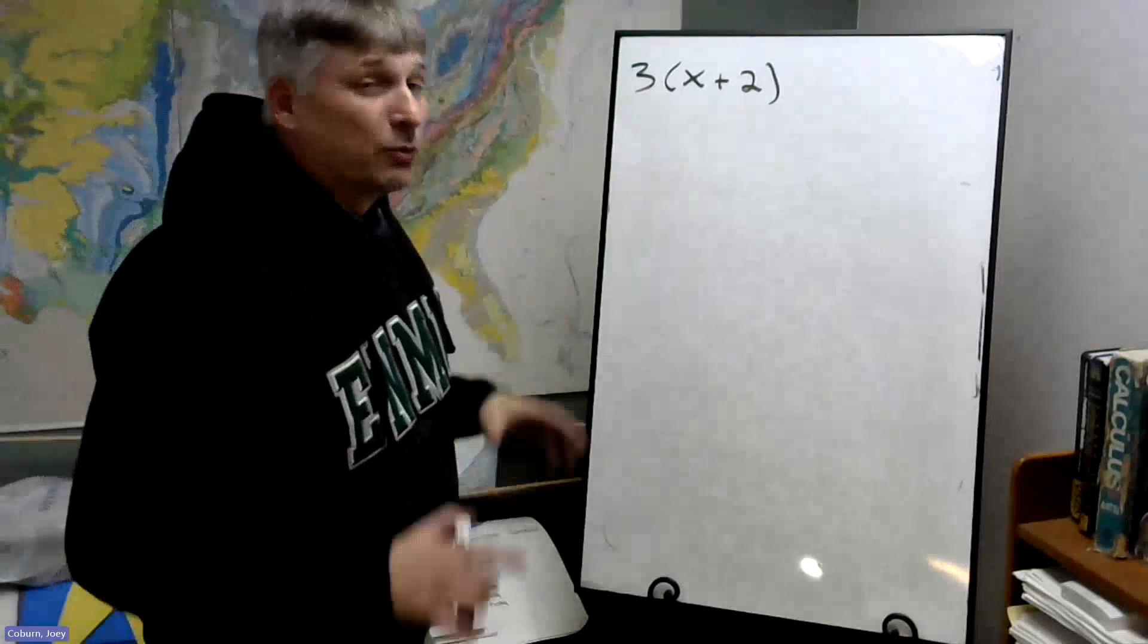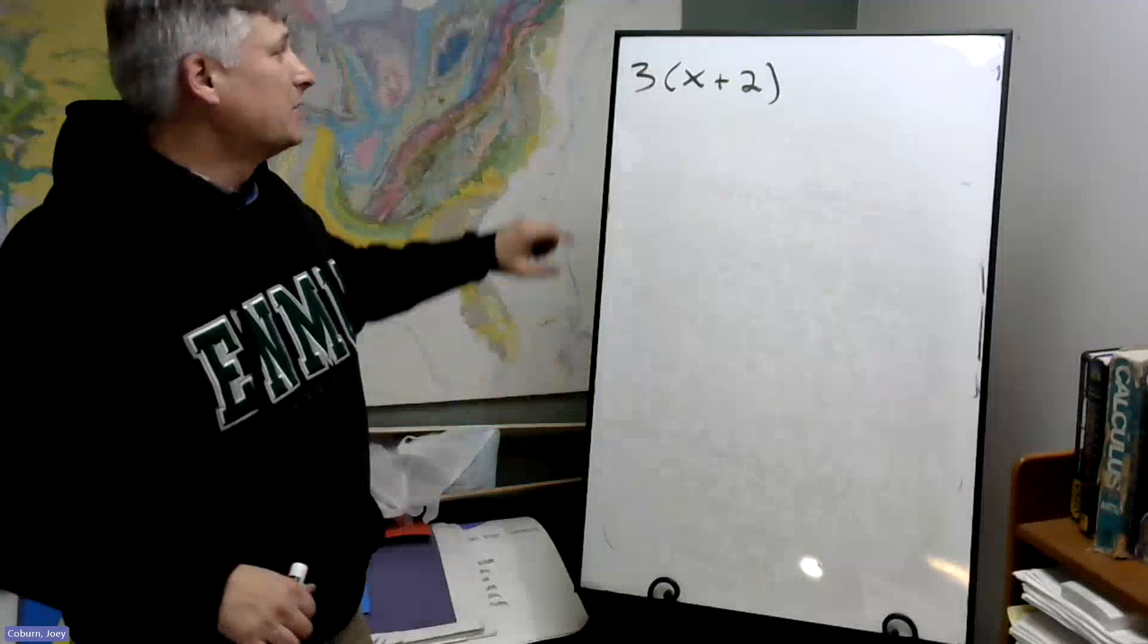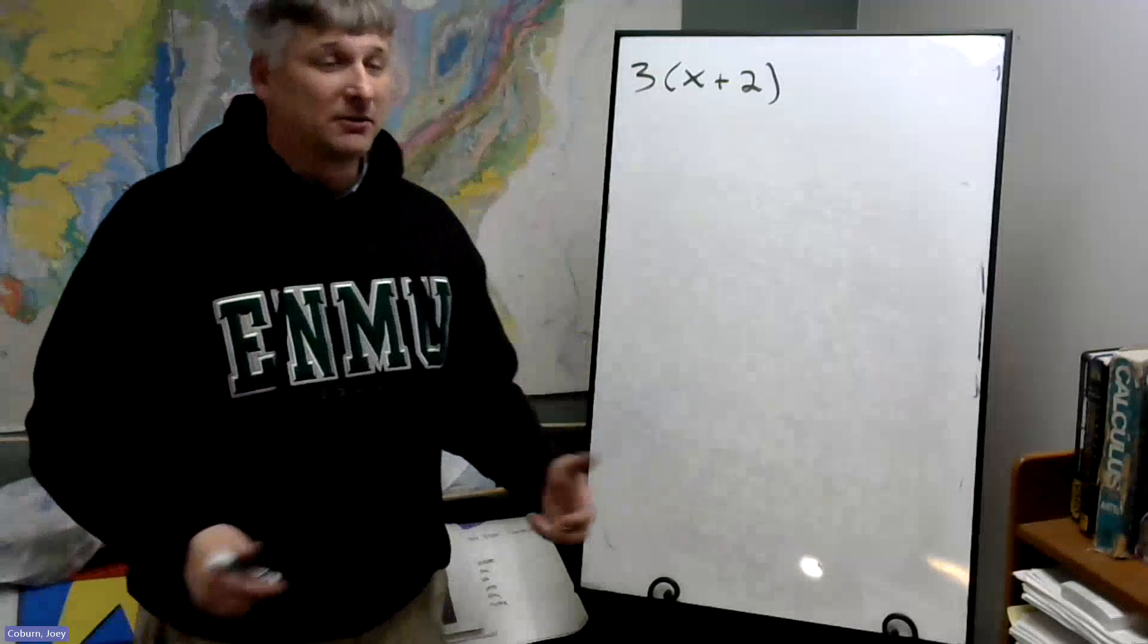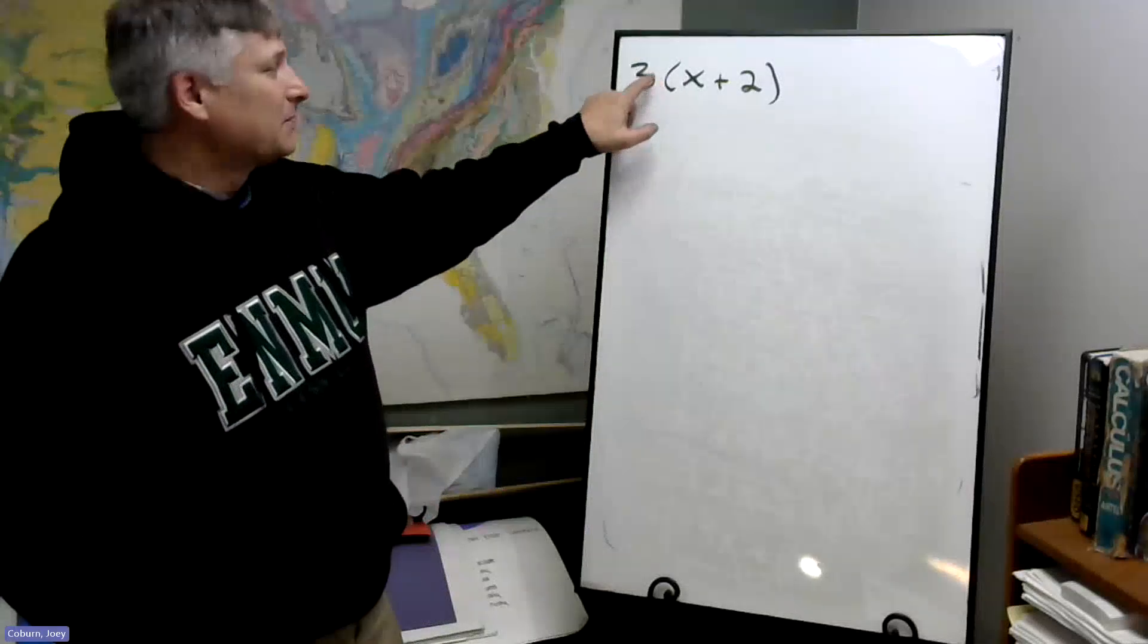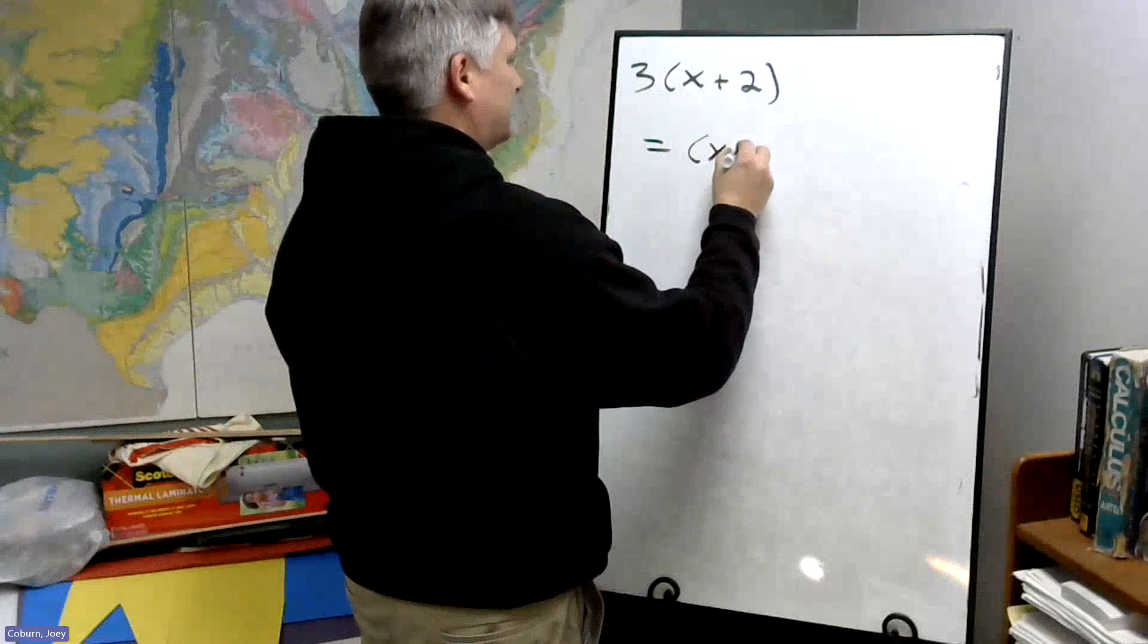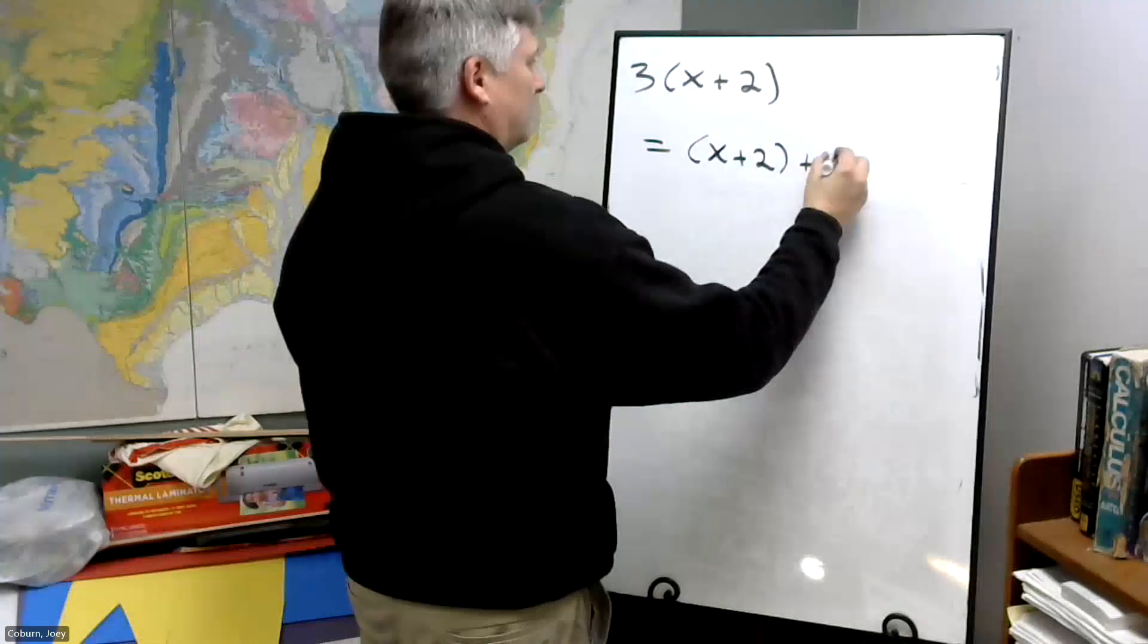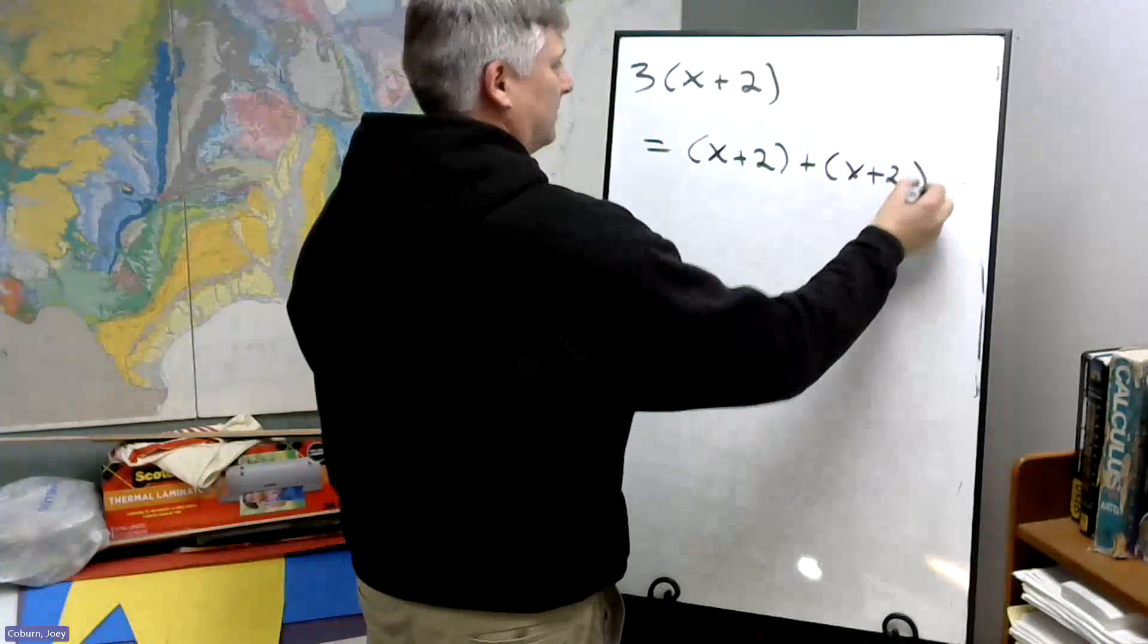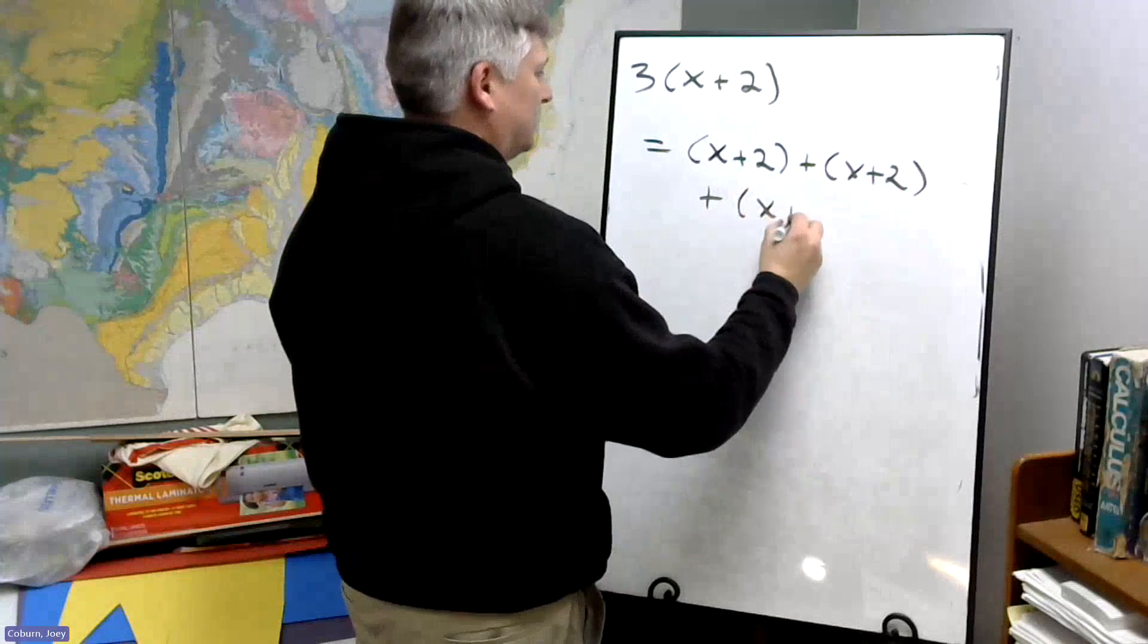And here's how. Remember the definition of multiplication: it's repeated addition. So 3 times x plus 2, that's x plus 2 plus x plus 2 plus x plus 2.